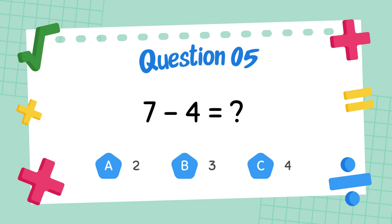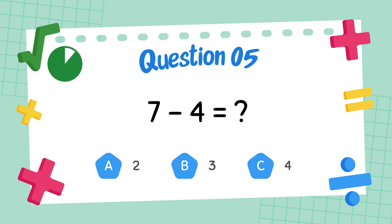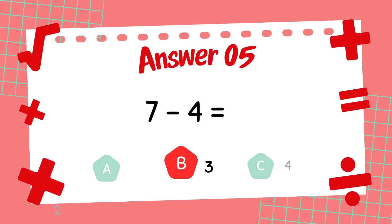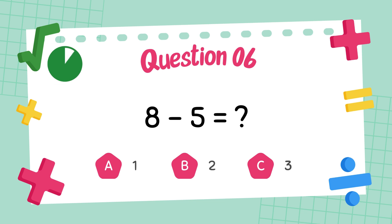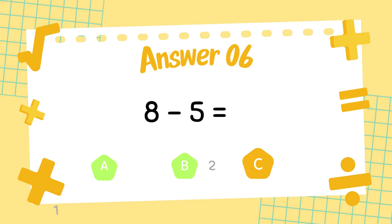What is 7 minus 4? The answer is 3. What is 8 minus 5? The answer is 3.